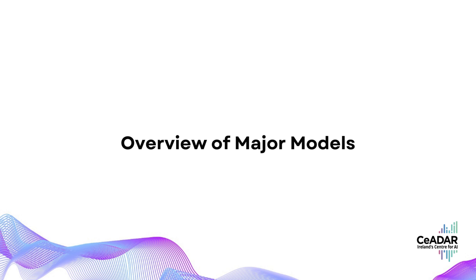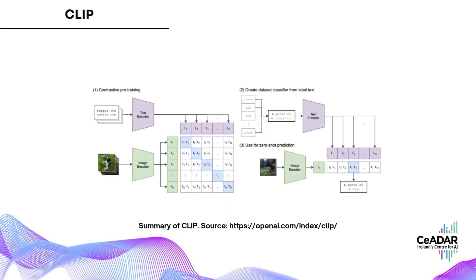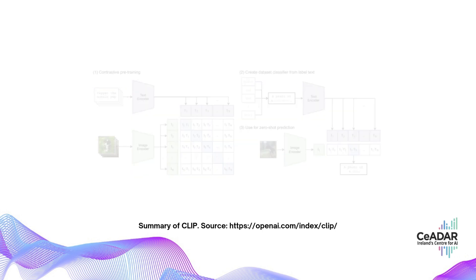Now that we understand the evolution, let's look at some of the key models that have helped shape this field. First up is CLIP by OpenAI. CLIP is super important because it was one of the first models to map text and images into a shared embedding space. This allows the model to handle both data types seamlessly, and it's open source, which has paved the way for a lot of innovation. In fact, many current models like LLaVA use CLIP as their image encoder.